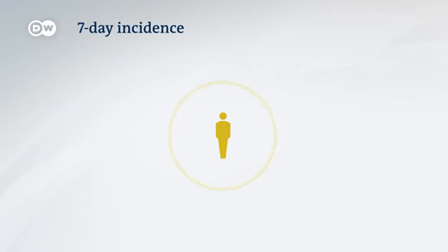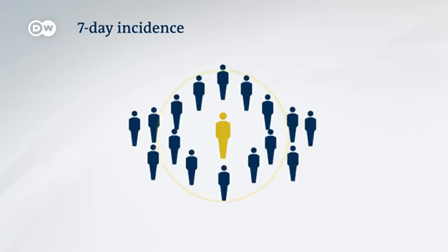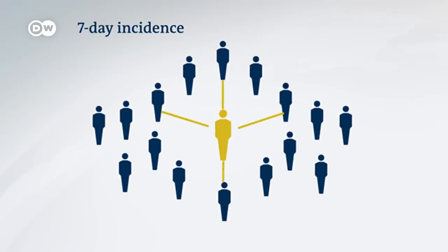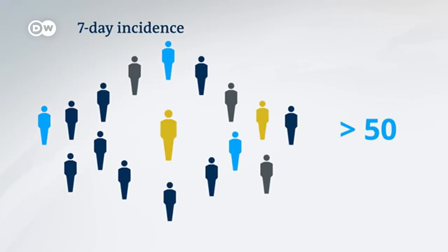The number allows you to ascertain the current infection rate — in other words, how many people are currently infected in a region. Since it refers to 100,000 inhabitants, one can also determine what the percentage of new infections is. A value is considered problematic for a region once it becomes difficult to identify all contacts an infected person has had. In Germany, that is a seven-day incidence above 50.